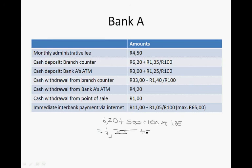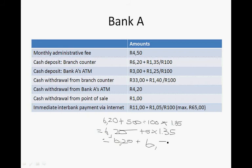So it's R6.20 plus 5 times R1.35. That is 5 times 135 cents, which equals R6.75. So if you were to deposit R500 at a branch, you will pay R6.20 plus R6.75, and that is R12.95.